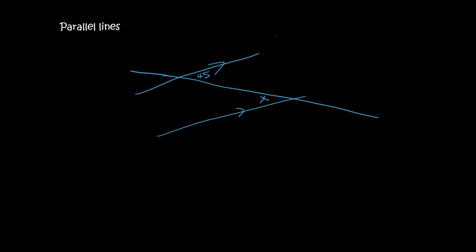Alright, so if I look at this diagram over here, I've got two parallel lines. How do I know that? Because of these arrows. I want to know what X is, and I want to know whether it's the U, the F, or the Z, or the N.